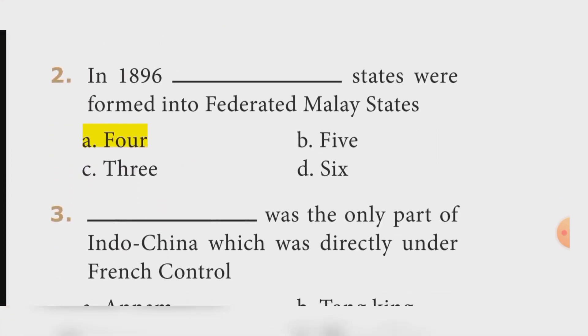Question two: In 1896 the states were formed into Federated Malay States. Answer: Option B — Four.